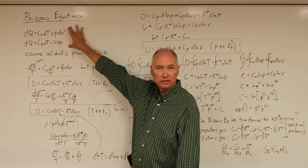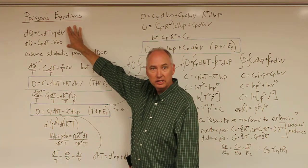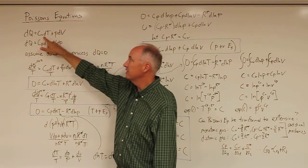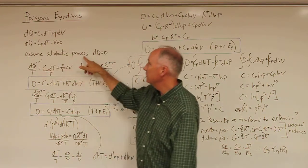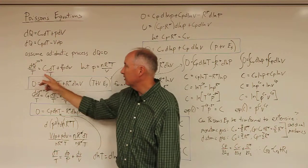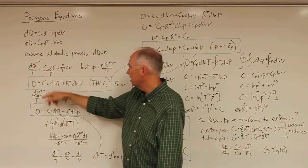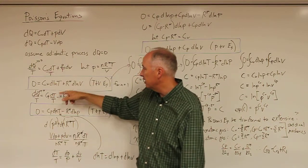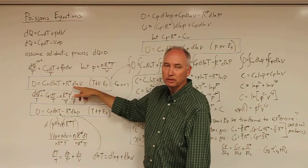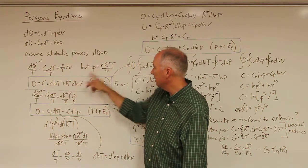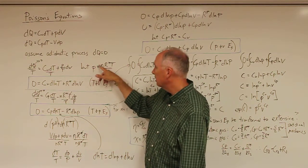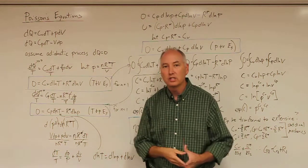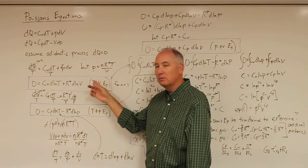We're going to start off with the first law of thermodynamics in the extensive form. So we've got dq is equal to c_v dT plus p dV, and we're going to assume an adiabatic process, just like we did for potential temperature, and divide both sides by T. So dq goes to zero, and we're left with c_v times the derivative of the natural log of T, which is dT over T, plus R* times the derivative of the natural log of V. This came from substituting in from the ideal gas law, and this is our equation to derive Poisson's equations from, that includes both temperature and volume.